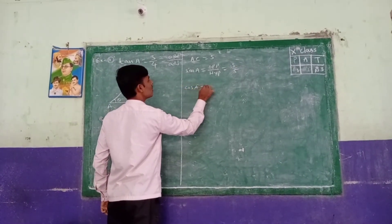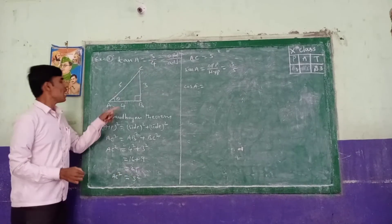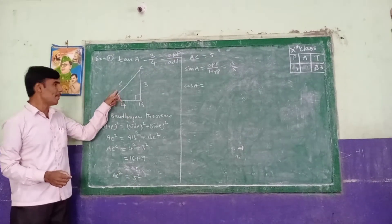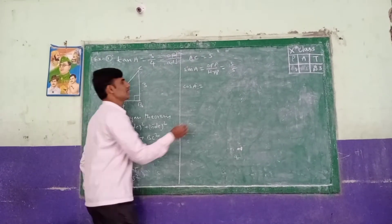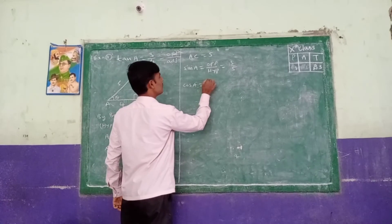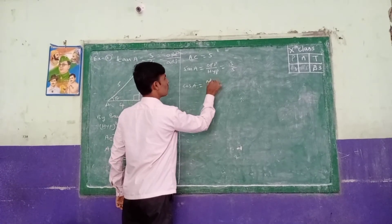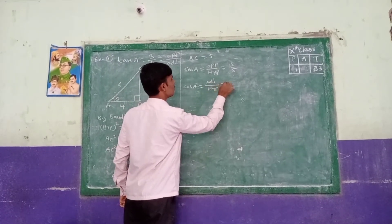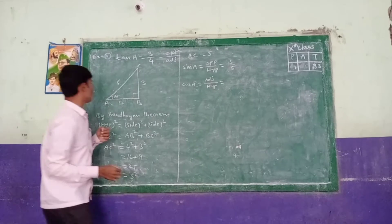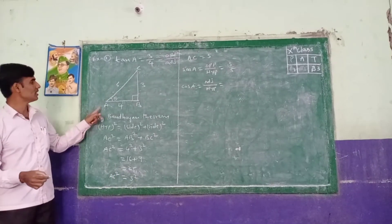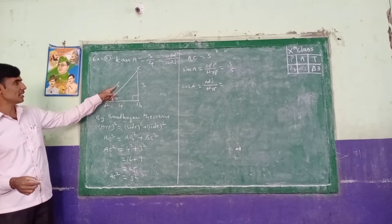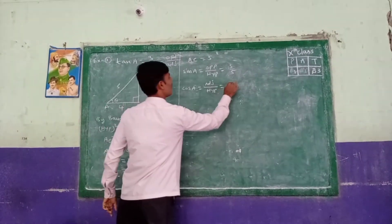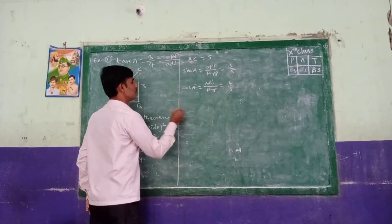Next, cos A equals adjacent side by hypotenuse. Adjacent side equals 4, hypotenuse equals 5. So cos A equals 4 by 5.